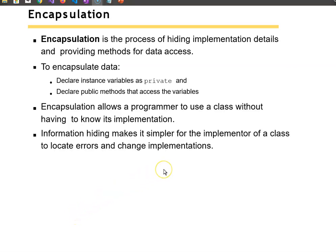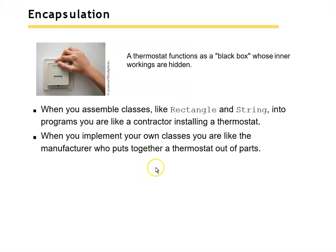This brings us to encapsulation, another important idea in object-oriented programming. Encapsulation is the idea of hiding implementation details and providing methods for data access. To encapsulate data we declare member variables private and declare public methods that access these variables. Encapsulation lets a programmer use a class without having to know its implementation. For example, we don't care if a class uses an integer or string to represent something — we can change it at will. A thermostat functions as a black box: we don't care how it works, but we can use it to raise and lower the temperature.